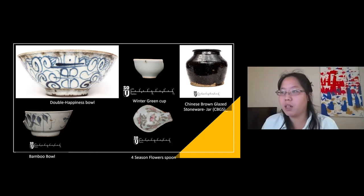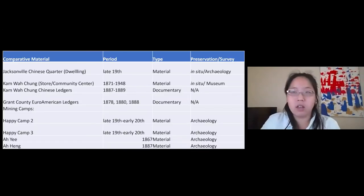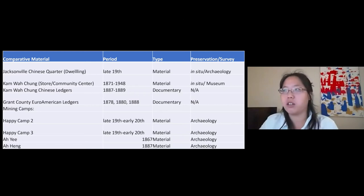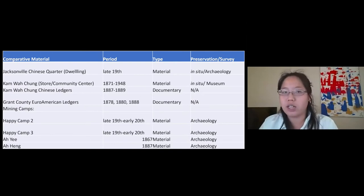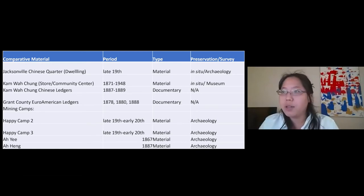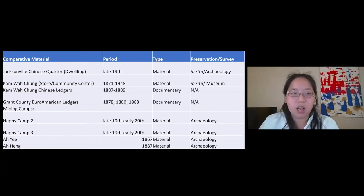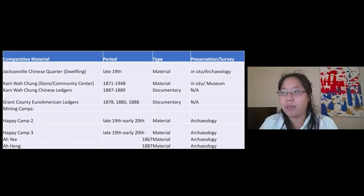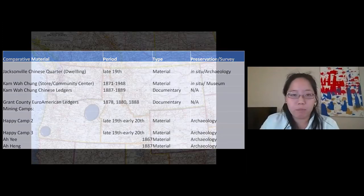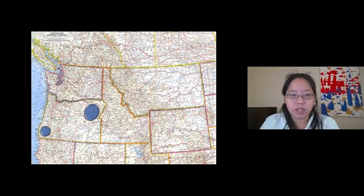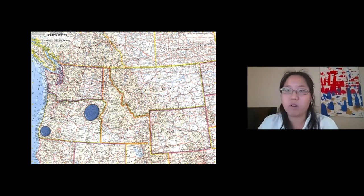My research specifically focused on particular classes of artifacts across different archaeological sites. These include the Chinese Jacksonville Chinese Quarter, four different mining sites in the Malheur National Forest, the Kam Wah Chung Chinese ledgers, and the Grant County Euro-American English ledger. I also used materials from the Kam Wah Chung museum itself. Broadly, Jacksonville is to the south while the Malheur National Forest and Kam Wah Chung are in the other region.